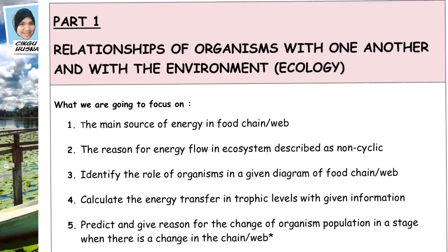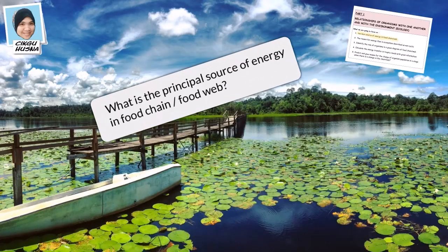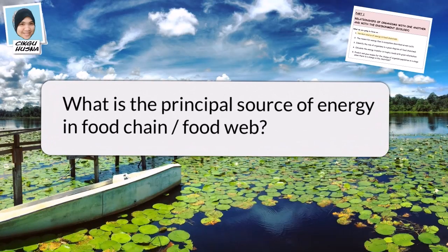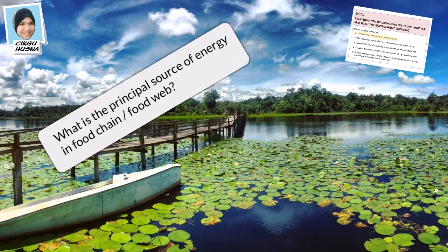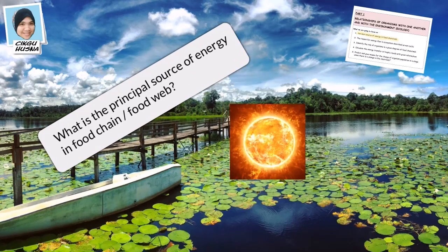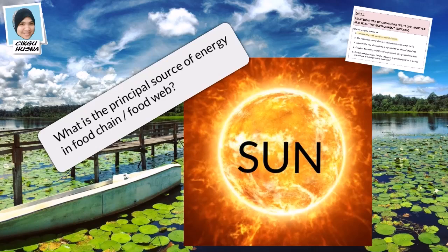The first point is on the main sources of energy in food. What is the principal source of energy in a food chain and food web? In a food web and food chain, the main source of energy is the sun.